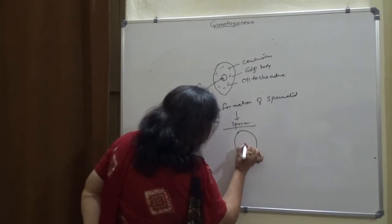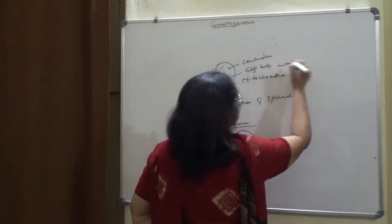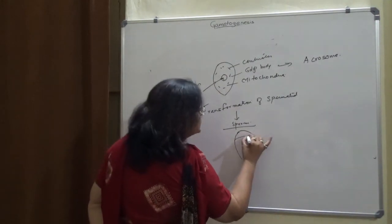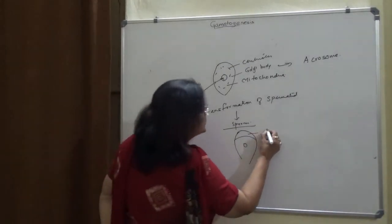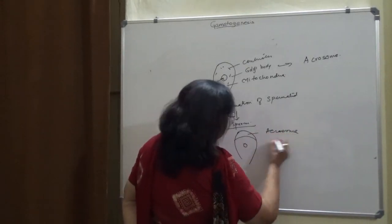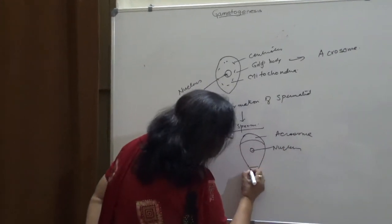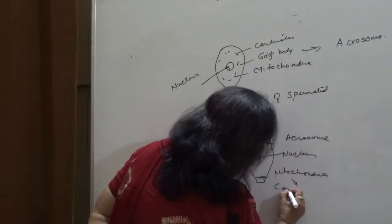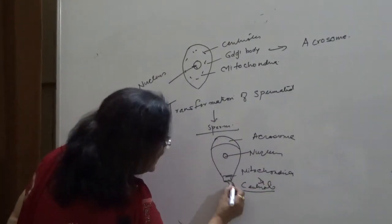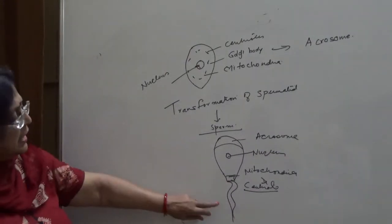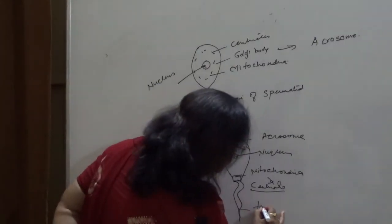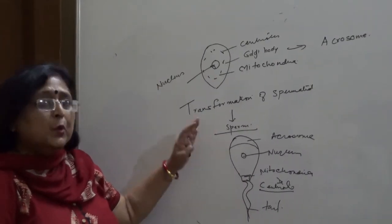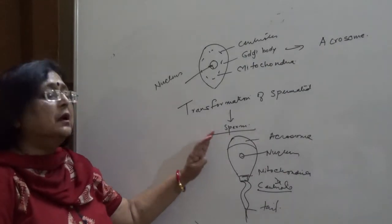The nucleus becomes small. The Golgi body — a part of it — gets converted into the acrosome, which comes to lie as a cap-like structure in front of the nucleus. So this is the acrosome, this one is the nucleus. The neck is formed by the mitochondria and the centriole. The centriole develops the axial filament, which will develop into the tail of the sperm. The long axial filament gets converted into the tail of the sperm, and the sperm is now formed, able to swim freely in the seminal fluid or in water.